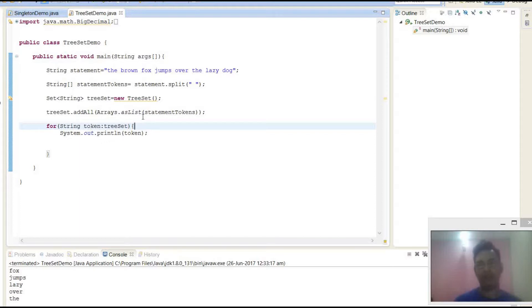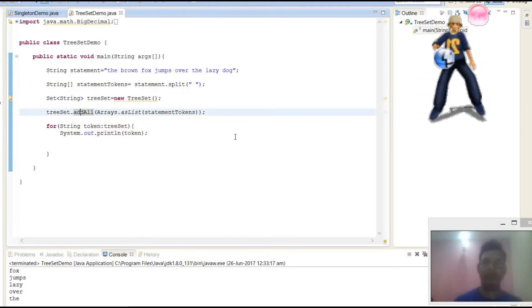So now all elements of this array has been added to TreeSet. So what TreeSet will internally do - it will call the instance of TreeMap.